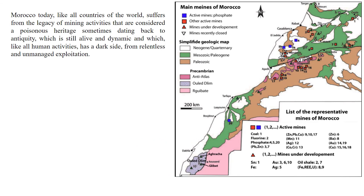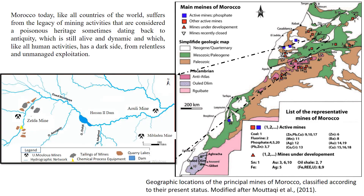Morocco today, like all countries of the world, suffers from the legacy of mining activities that are considered a poisonous heritage, sometimes dating back to antiquity, which is still alive and dynamic, and which, like all human activities, has a dark side from relentless and diminished exploitation. Morocco is characterized by a lot of mines — some active, some under development, and others closed — all aligned with metallogenic provinces associated with major geodynamic events. High Malouia is one of those metallogenic provinces, also named the lead district, characterized by three abandoned mines: Ahulemi, Bladen, and Zayda.